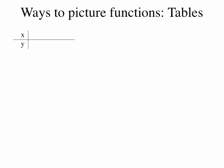We have a couple of different ways to picture functions, and one is with tables. We use a table to keep track of the numbers we put into a function — the x values — and the numbers we get out, y. If I put in a 1, it spits out a 2; if I put in a 3, it spits out a 6; if I put in a 4, it spits out an 8. You might notice the rule is doubling the value. This table shows the inputs and outputs for a particular function.